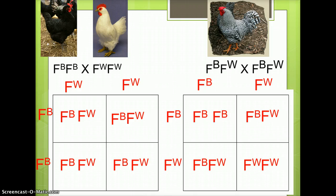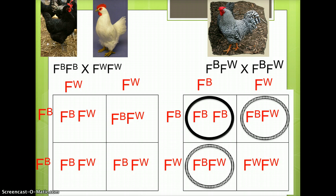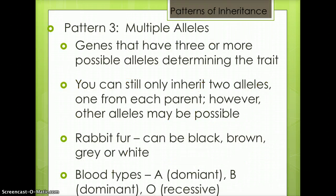This cross would result in 100% of the offspring having black and white feathers, because they are capital F with a capital B and capital F with a capital W. The Punnett square on the right shows a black and white feathered chicken crossed with a black and white feathered chicken. 25% of the offspring will be black feathered, 50% will be black and white feathered, and 25% will be white feathered.